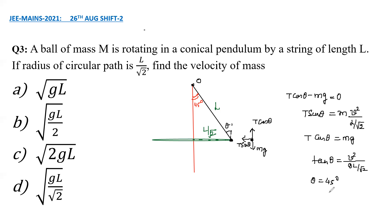So again writing that T cos theta as mg, we get tan theta equals V square divided by g L upon root 2. Since theta is 45 degrees, V comes out to be square root of g L upon square root of 2. So the correct option is option D. Hope you are clear with this.